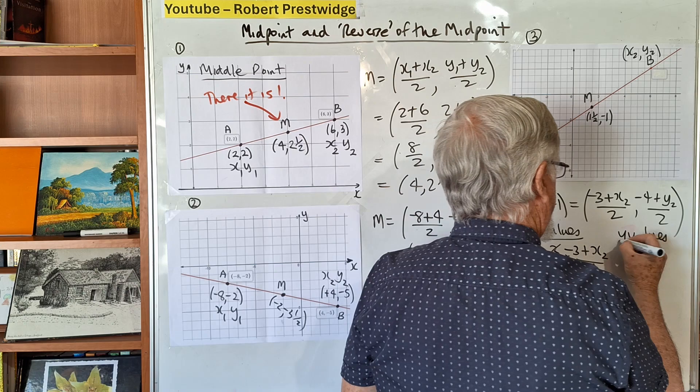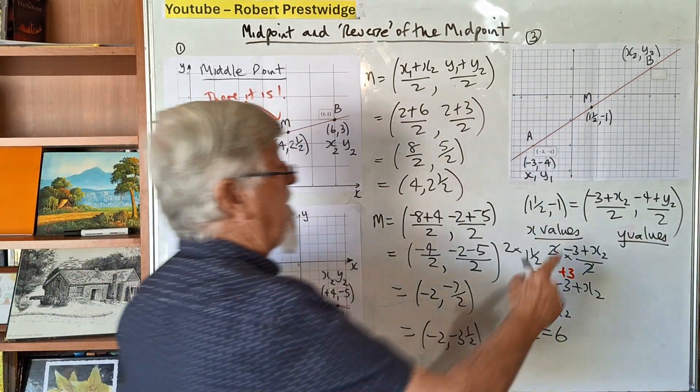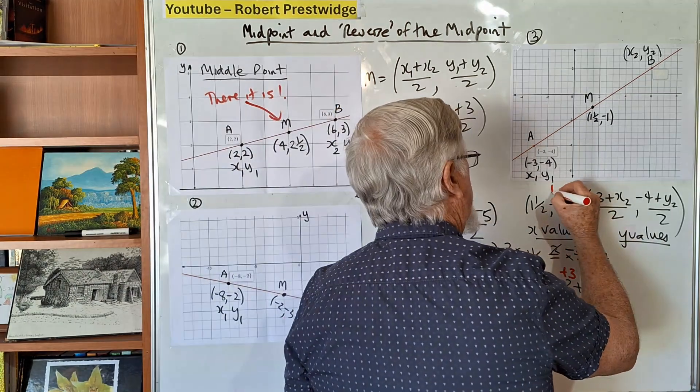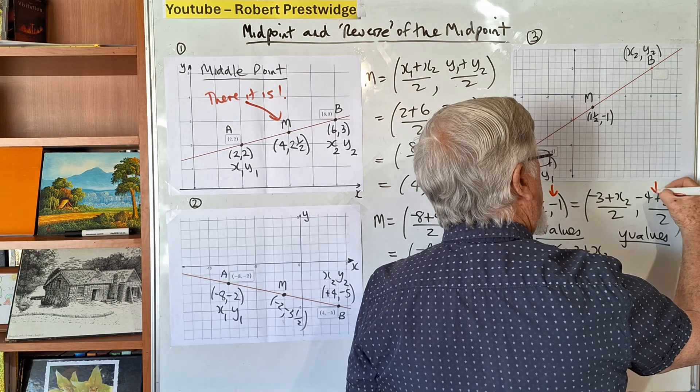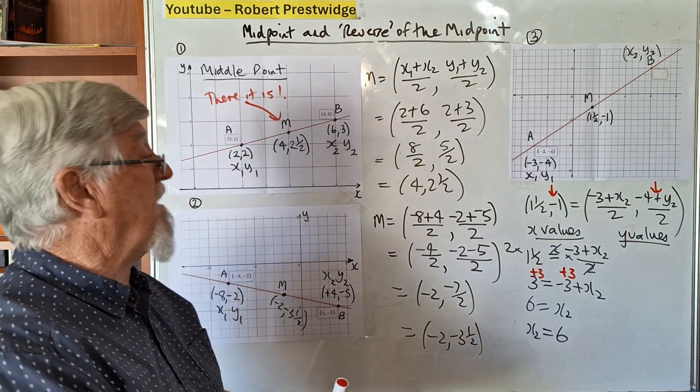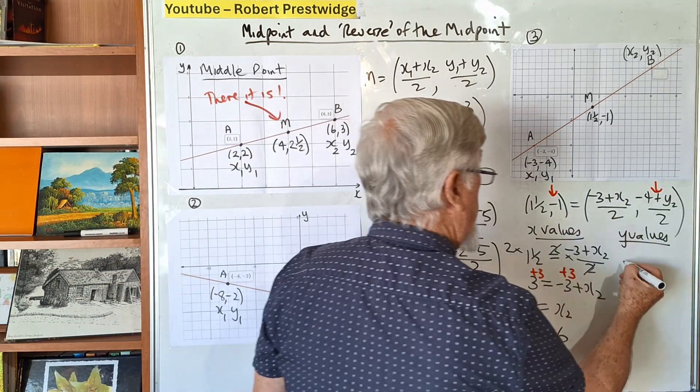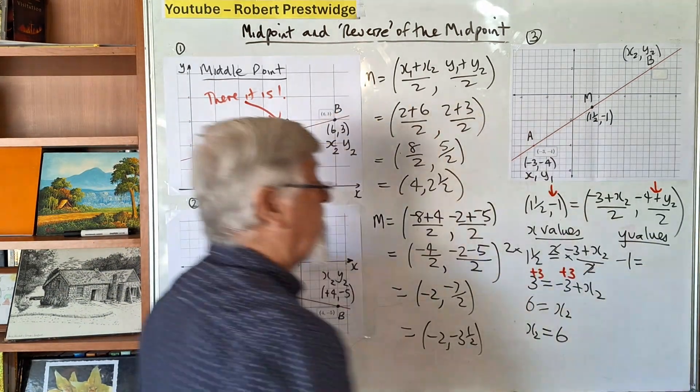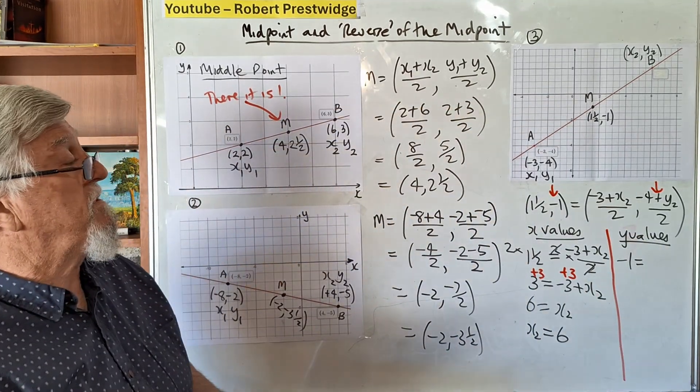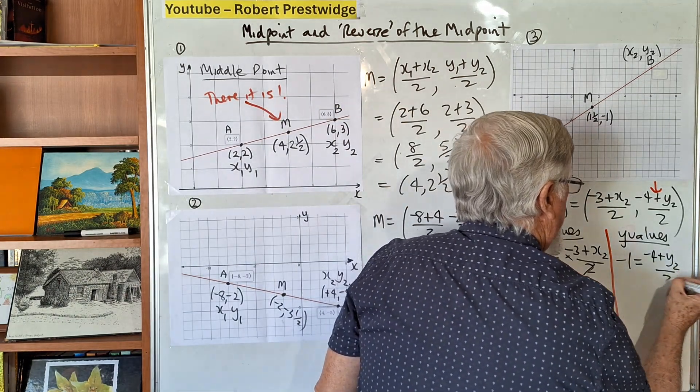You've got 6 equals x₂, so the x value is 6. Now y values. We're making the equation from the y values, talking about this part here with the y coordinates. We have -1 equals (-4 + y₂)/2.